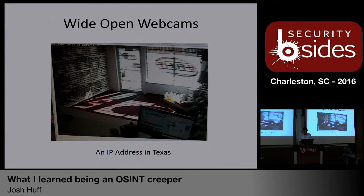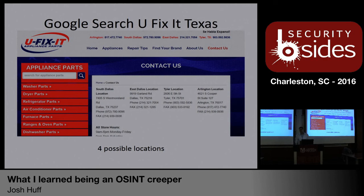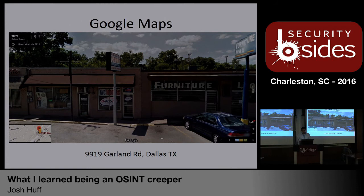Using Shodan — we're all familiar with the wide-open webcams you can find out there. This one was an IP address that located out in Texas. It was definitely not a good one because the webcam was one of those pivoting ones, and that is a point of sale system down at the bottom of the frame — you could totally see what was going on. A quick Google search for the sign visible through the window — 'UFixit' — gives you four locations in Texas. Real easy to head over to Google Maps and find the one that matches the picture, and you've got a full address.